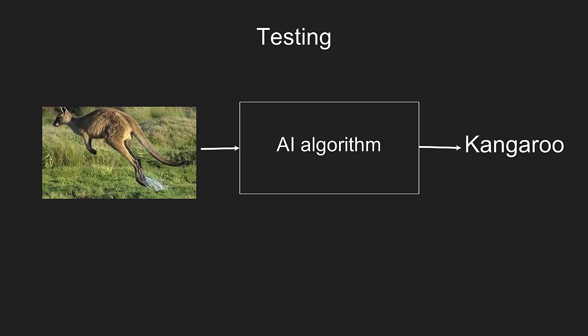Similar to humans, machines can also make mistakes and produce errors. If the machine does not operate as expected, it needs to be trained using more examples.